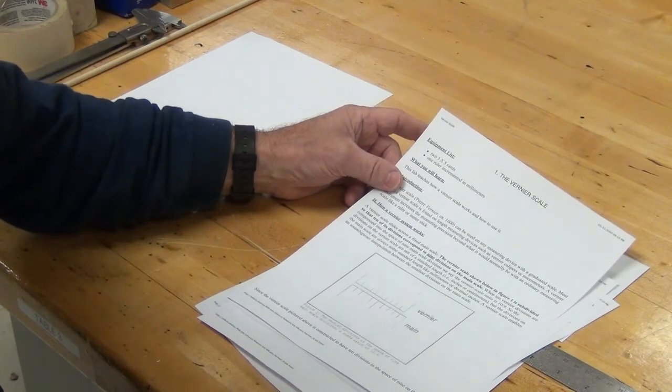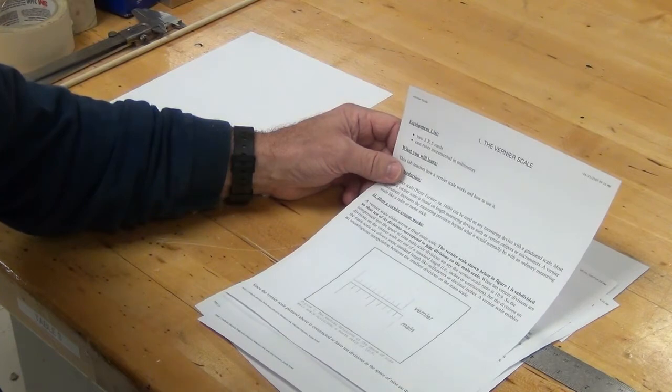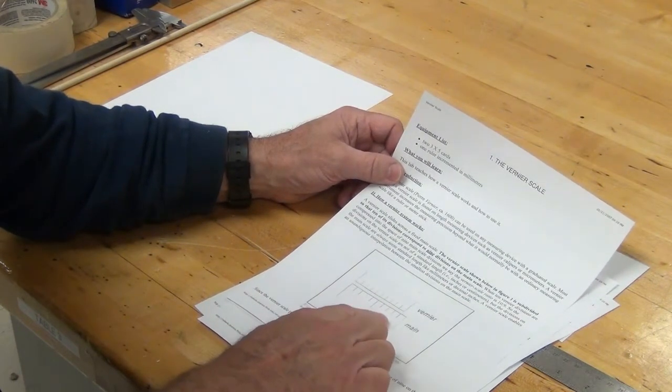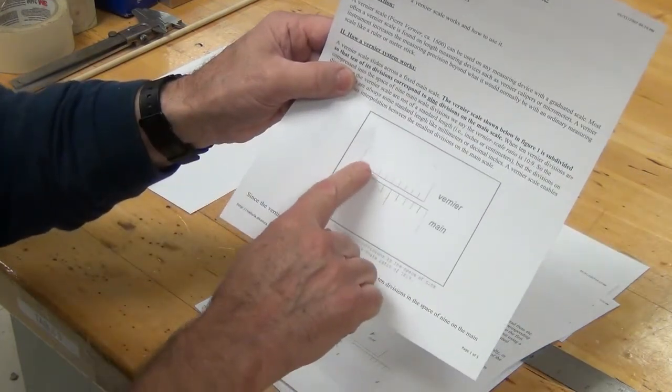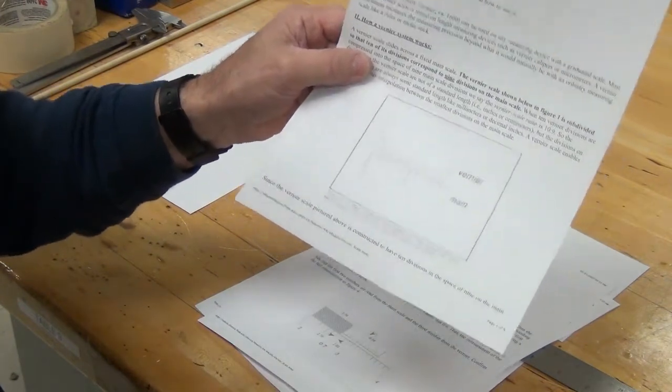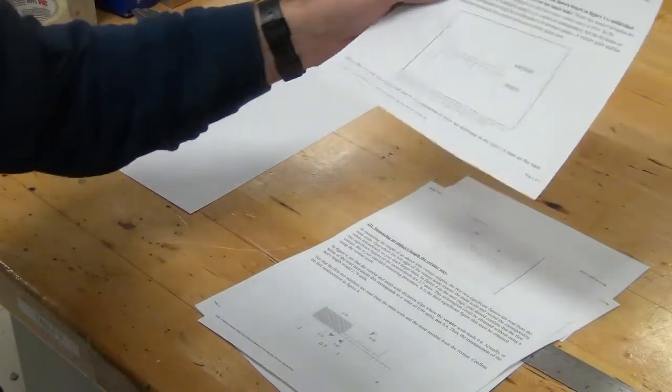Right? Now, the tricky part is they're not the same size spaces that you draw. So, your main scale is gonna be your actual units. And in order to do the vernier scale, you draw these units as nine tenths of the size of the main scale.